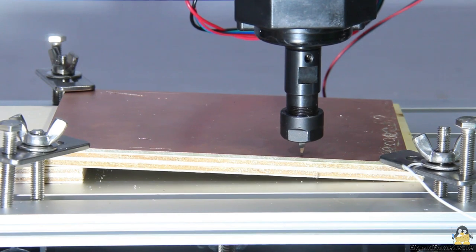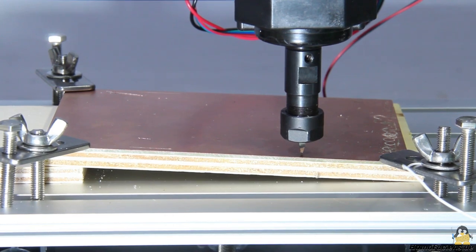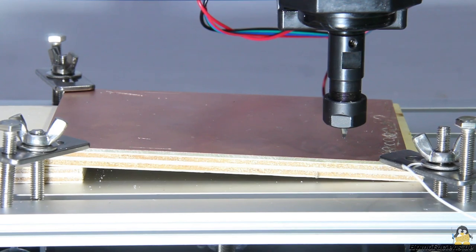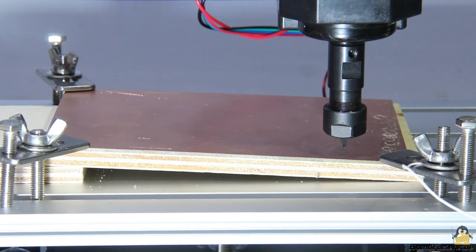As soon as the cutter tip touches the copper plate, the GPIO pin is pulled to ground and the current height of the Z axis is stored. The Raspberry Pi automatically moves to all points in a grid defined by software, I have written a Python script for this purpose.